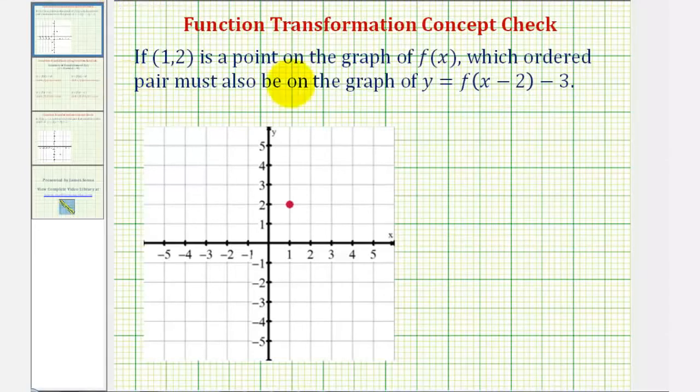If (1,2) is a point on the graph of f(x), which ordered pair must also be on the graph of y equals f(x - 2) - 3?